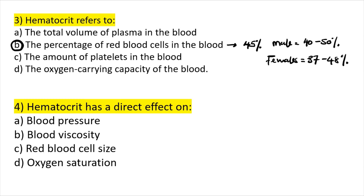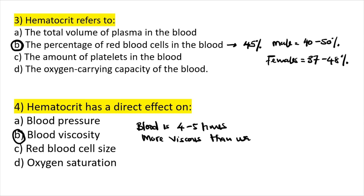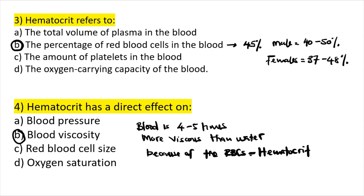Question four: hematocrit has a direct effect on blood viscosity. Blood is four to five times more viscous than water because of the red blood cells. The higher the red blood cells, the higher the hematocrit, and the higher the viscosity. Viscosity is the resistance to the flow of a fluid.